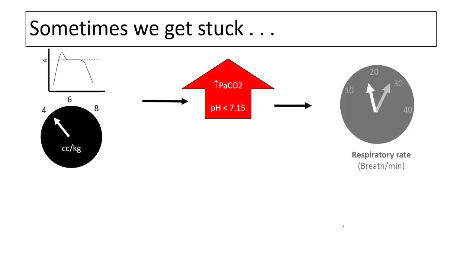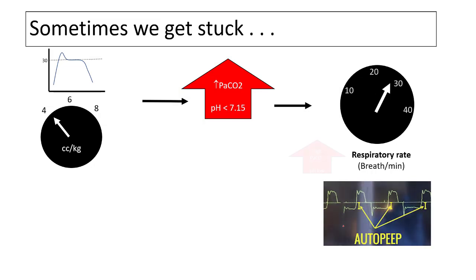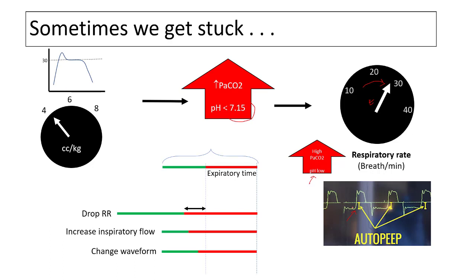In sicker patients, you may have decreased tidal volumes to 4 cc per kg with plateau pressures barely around 30. The ABG shows very high PaCO2 and very low pH. You rightly increase the respiratory rate, but you are unable to fully correct the pH and you start developing auto-PEEP. What are the options to improve pH?